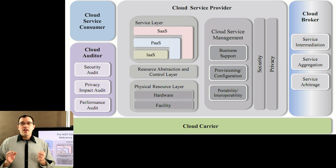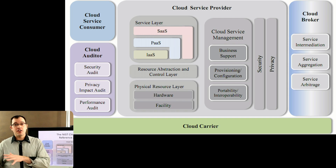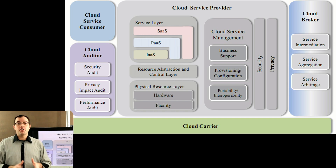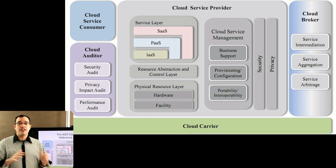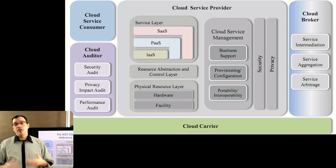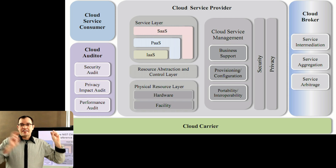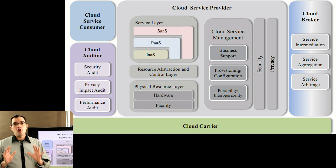Portability and interoperability — this is the ability to leave the service. Google has gotten very good, because of government requirements, about offering portability: the ability to take all of the data that was in their cloud and say, I'm done, I'm walking away, and export your mail, your contacts, all of that information. If you are a cloud service and you don't offer portability and interoperability — the ability to leave that service — you don't meet the NIST definition of a cloud provider.